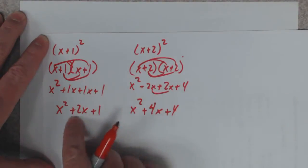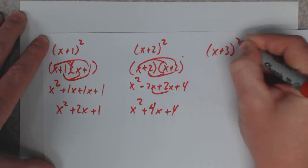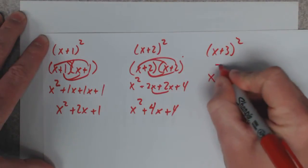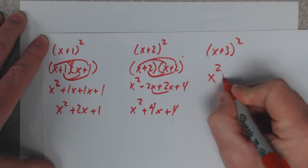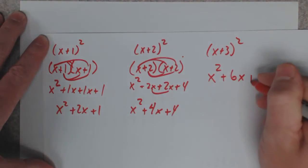Double 1, you get 2. Double 2, you get 4. If you had x plus 3 squared, you can automatically say x squared, and you can automatically say 6x. The last term, the number out here...